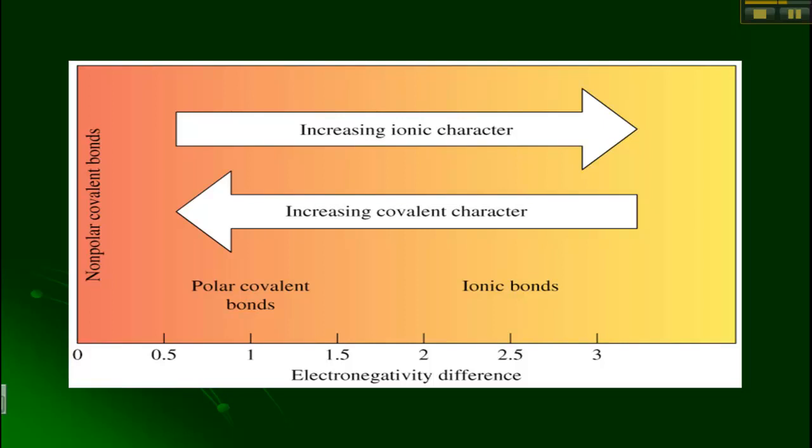You can determine polarity by looking at the electronegativity difference as well as the shape. So you can see that the greater the electronegativity difference, the higher we're going to ionic bonds and the less polar our molecule is. If we head towards small electronegativity differences, we have polar covalent bonds right around a difference of 1. And then non-polar covalent bonds have electronegativity differences close to 0.